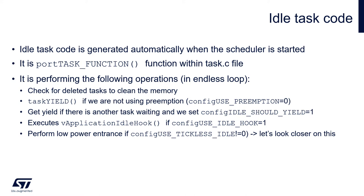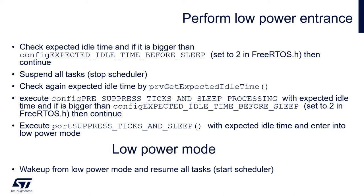The idle task code is stored within the prvIdleTask function within the task.c file. Let's have a closer look at what is happening within the idle task function body once we enable config_use_tickless_idle. At the beginning there is an estimation of the expected idle time which can be used to put the system into low power mode. If it is too short — shorter than config_expected_idle_time_before_sleep, which is set to 2 in FreeRTOS.h — the system will not be put into low power mode.